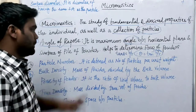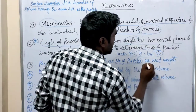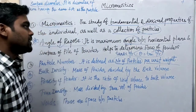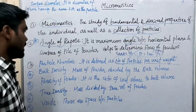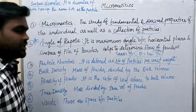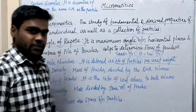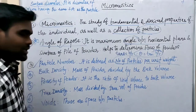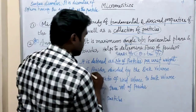Next, particle number. It is defined as the number of particles per unit weight. That is particle number — how many particles are present per unit weight.